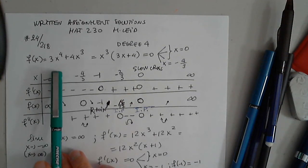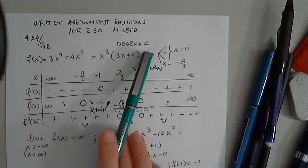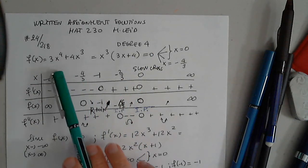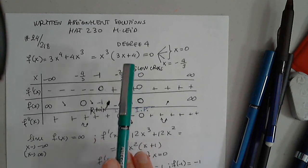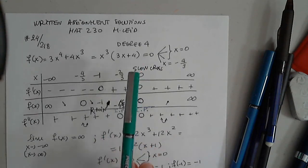In this problem, we are asked to graph this polynomial function degree 4. I factor out x to the third. I get 3x plus 4 because I need to find the x-intercepts.